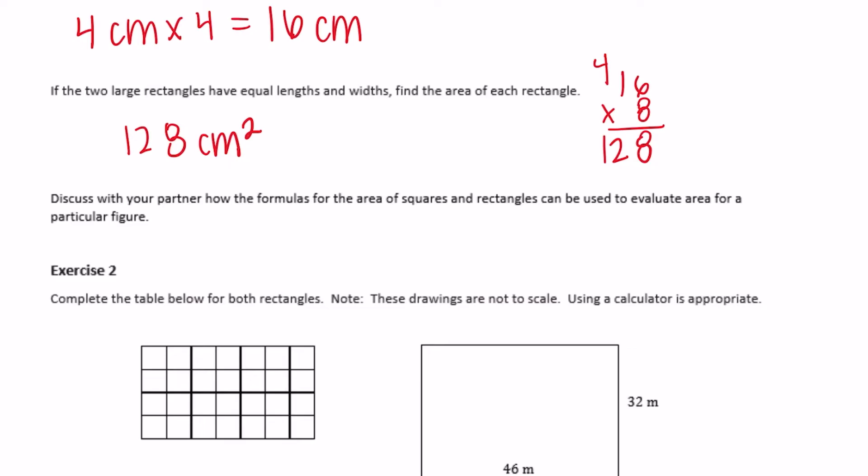Discuss with your partner how the formula for area of squares and rectangles can be used to evaluate area. Basically, you do length times width — the same formula for both rectangles and squares — but squares can be simplified to just the side squared.